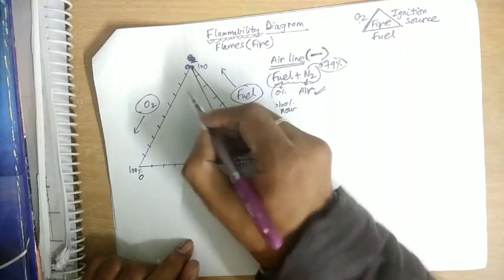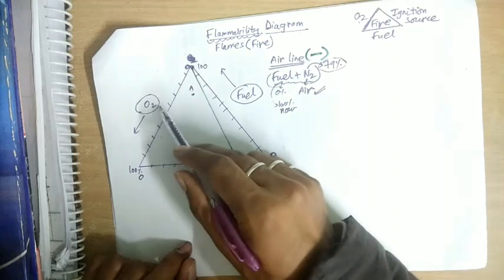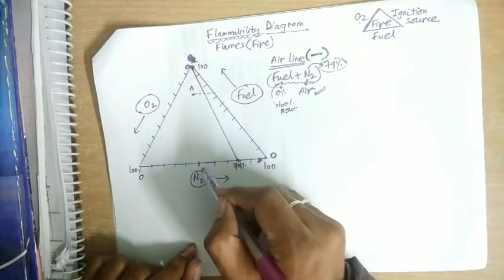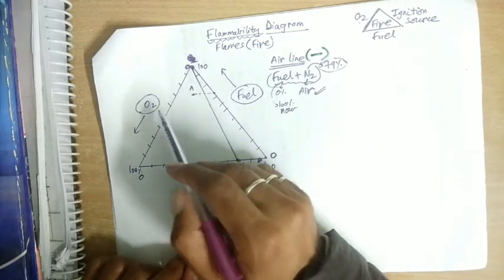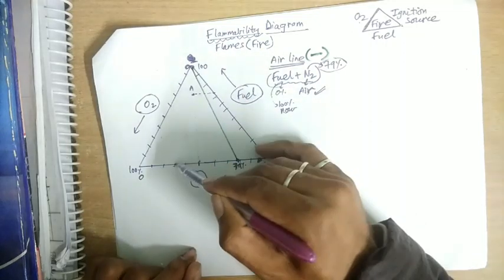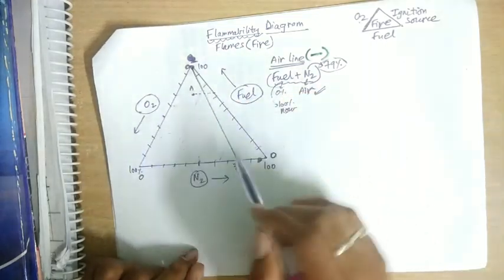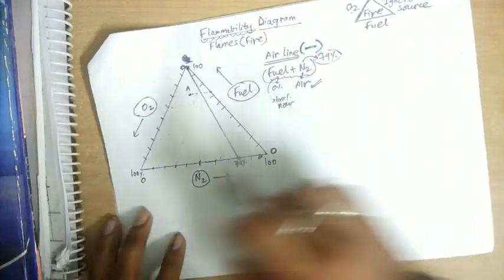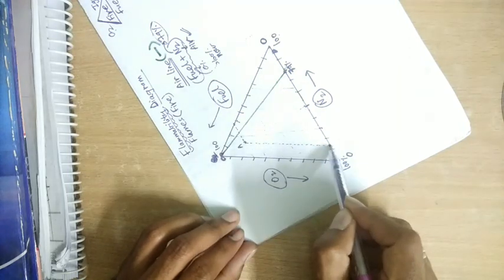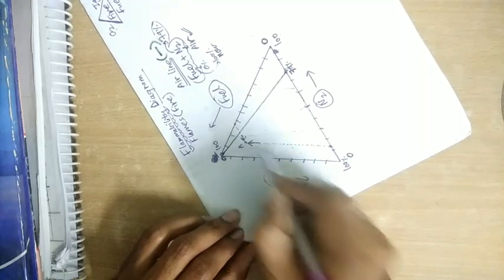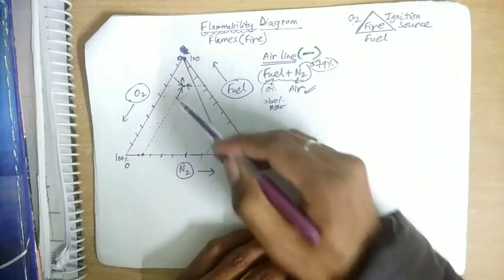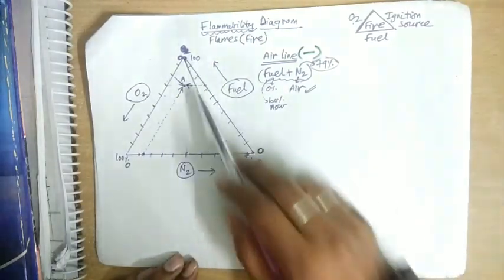To read the percentage of each component at any point A on the diagram: for fuel percentage, draw a line through A parallel to the nitrogen axis; for nitrogen percentage, draw a line through A parallel to the oxygen axis; and for oxygen percentage, draw a line through A parallel to the fuel axis. Because this is a triangle and not a rectangle, straight perpendicular axes cannot be used.